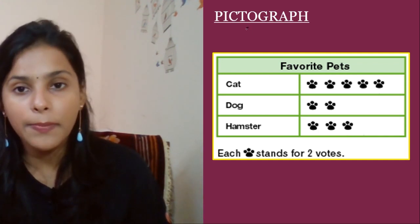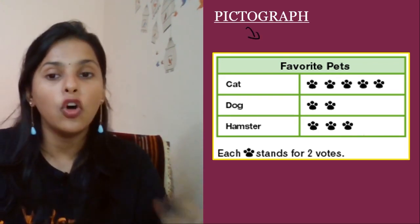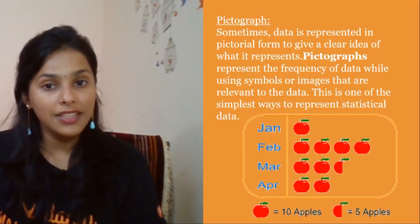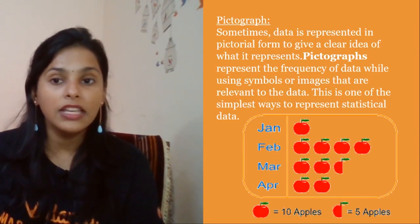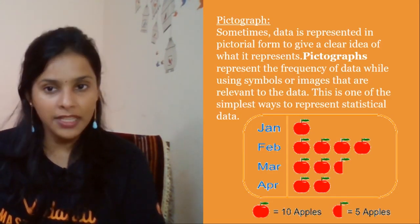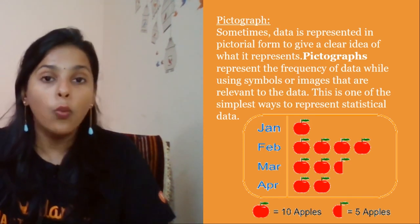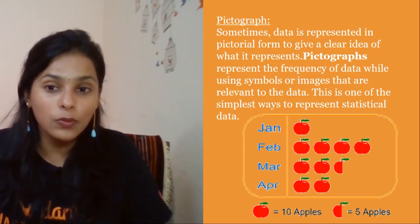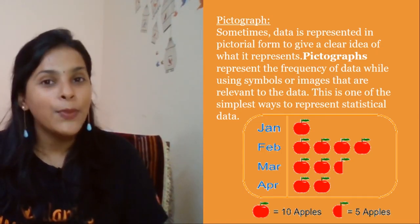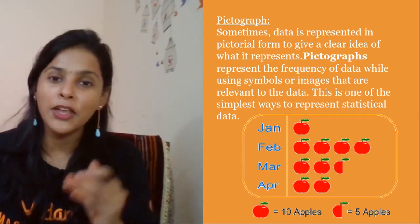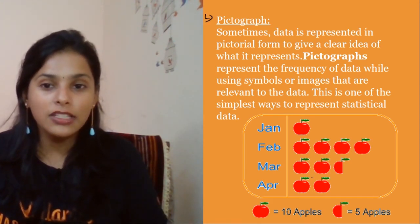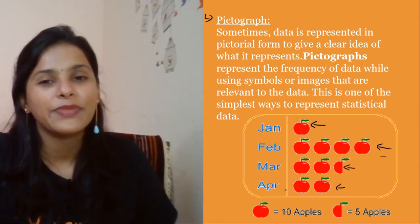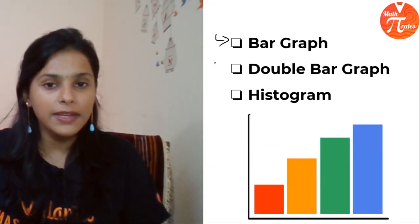First is pictograph. What do we mean by pictograph? When we use some symbol or picture in the form of making that graph. Sometimes data is represented in pictorial form so we can get a clear idea what it represents. Pictograph represents the frequency of data while using symbols or images that are relevant to that data. This is one of the simplest ways to represent statistical data. Many of my pirates are really good in drawing, so I hope you are going to love this pictograph because you represent the data in the form of some symbol or images.